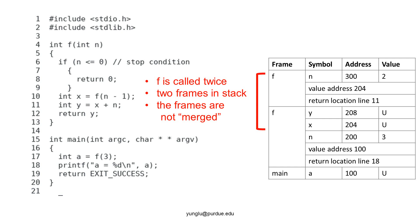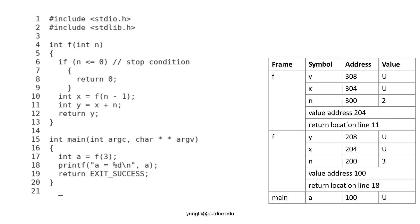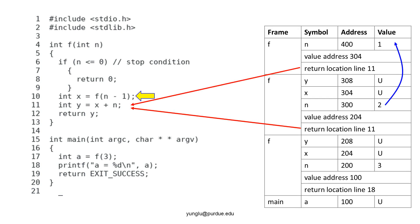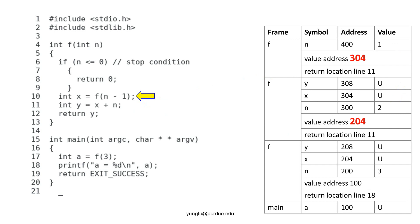In the second call of the function f, the input argument is 2. This does not satisfy the stop condition. Thus, the function calls f again at line 10. The argument is n minus 1 and it is 1. The value address is x's address and it is 304. Please be careful about the value addresses in these two calls. The addresses refer to two different locations in the stack memory. The input argument n is not zero or negative. Thus, the stop condition is not met and the function calls itself again in line 10.